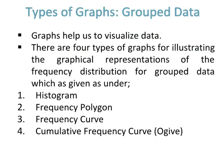There are four types of graphs for illustrating the graphical representations of the frequency distribution for grouped data, which are: number one, histogram; number two, frequency polygon; number three, frequency curve; and number four, cumulative frequency curve, also called ogive.